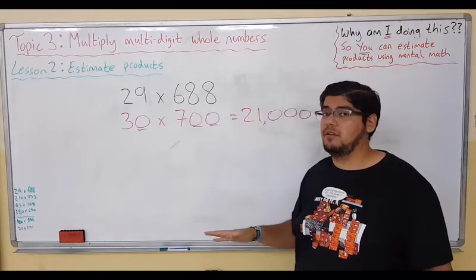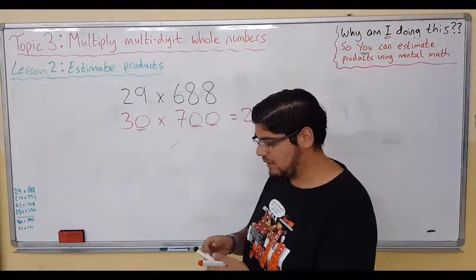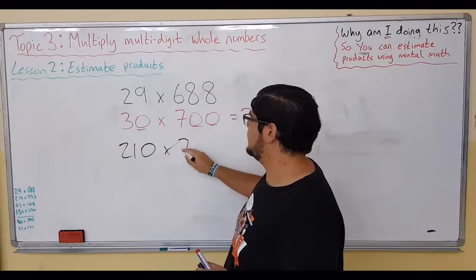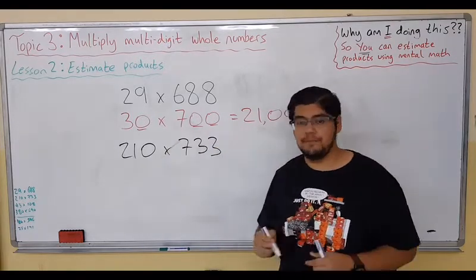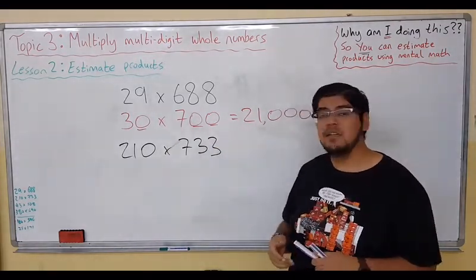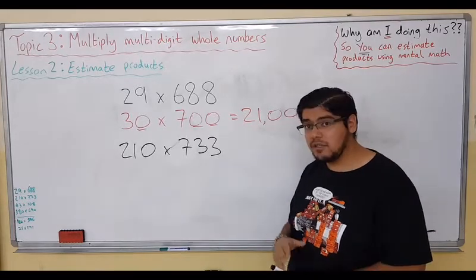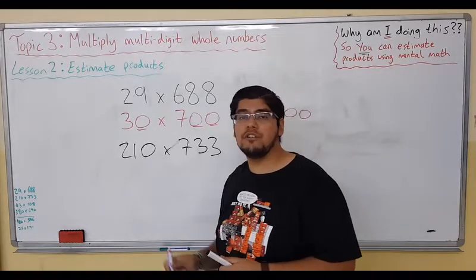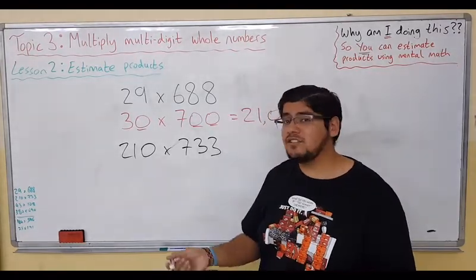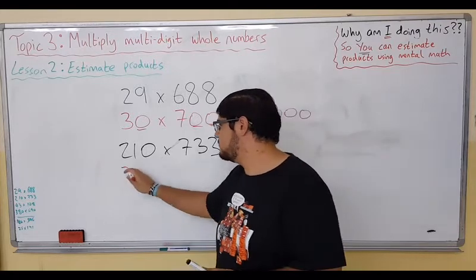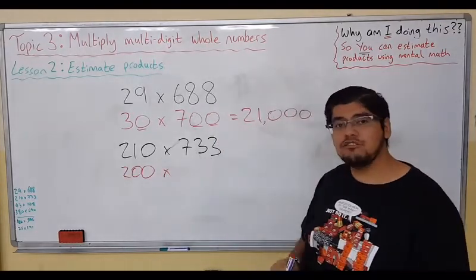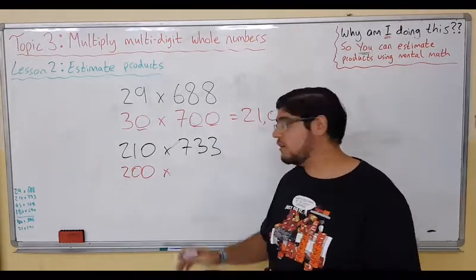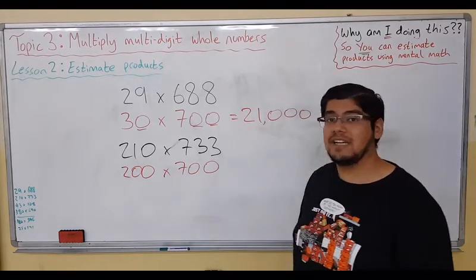Let's move on to our next example: 210 times 733. Again, let's use compatible numbers. Round the numbers to make it so easy we can do it like this. 210, we don't need the 10, let's just change it to 200. 733, we don't need the 30, it's so close to 700, let's take it to that. Now we have our numbers to work with.